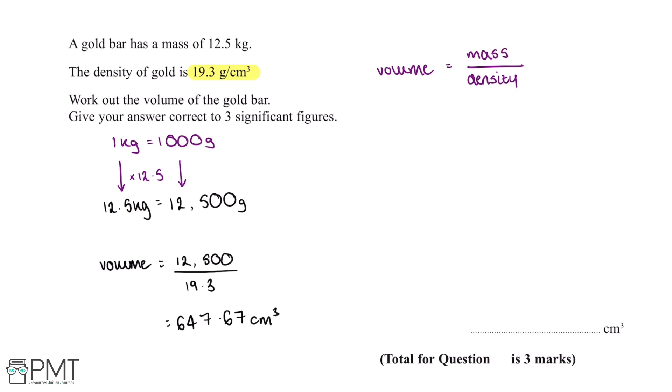The final thing we'll need to do is give our answer correct to three significant figures. 647.67 to three significant figures gives us 648 centimeters cubed, and this is our final answer.